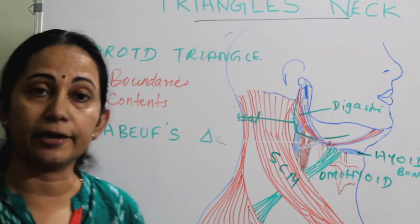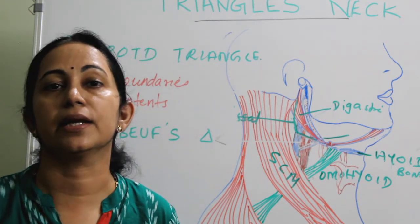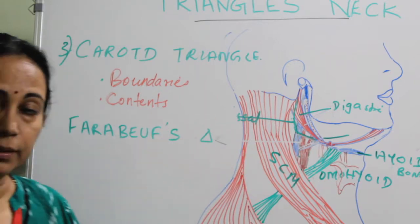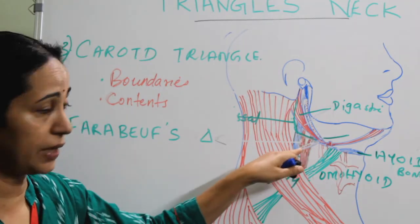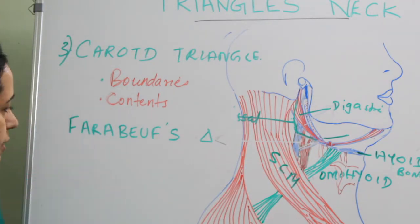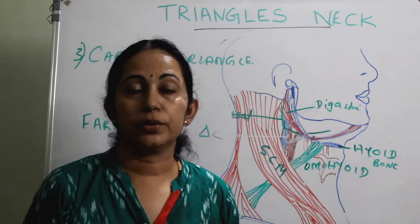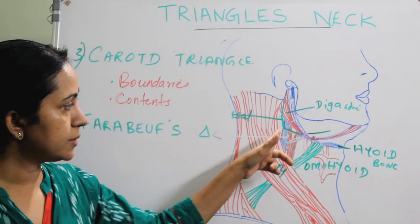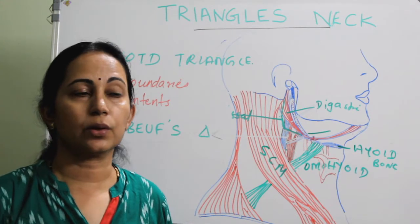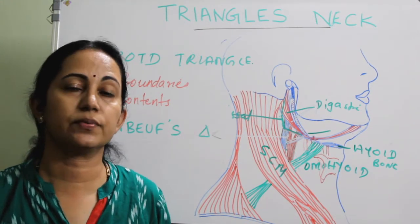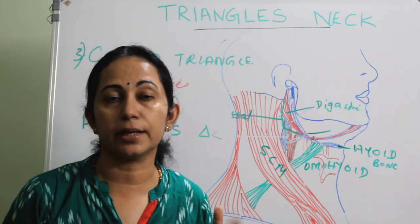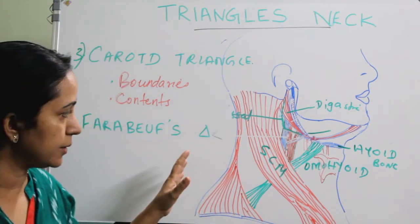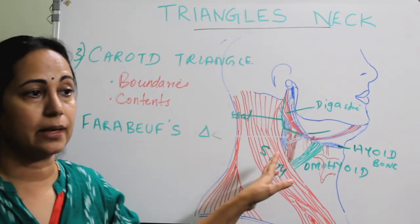The Farabeuf triangle is important in identifying the internal jugular vein in extensive neck dissections. The clinical significance of the carotid triangle: the important structures — the internal jugular vein, the common carotid artery, the hypoglossal nerve, and the vagus nerve — lie relatively superficial in the neck at this triangle. So when surgical exploration of these contents is needed, it is best done in the carotid triangle.